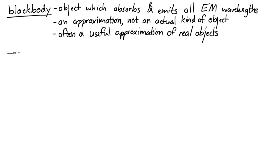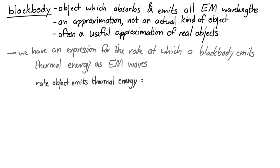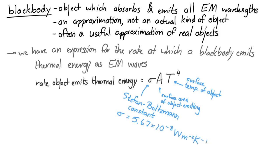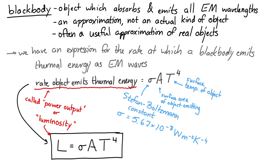If we have a black body, we can write an expression for the rate at which it emits thermal energy as electromagnetic waves. We write it this way: the rate at which the object emits thermal energy equals sigma times A times T to the fourth. A is the surface area of the object, T is the surface temperature, and sigma is the Stefan-Boltzmann constant, equal to 5.67 times 10 to the negative 8 watts per square meter per Kelvin to the fourth. This rate of emitting thermal energy is also called the power output, or the luminosity, written as capital L. So: L equals sigma times A times T to the fourth.